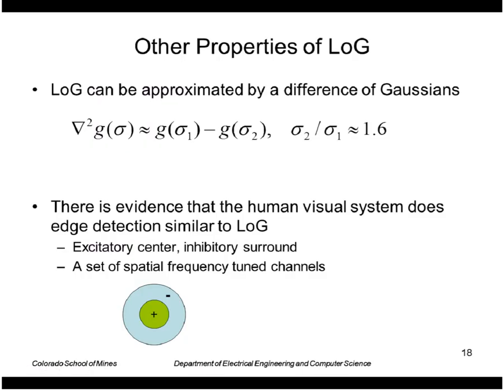Some other nice properties of Laplacian of a Gaussian, we can approximate it by a difference of Gaussian. If we just take a Gaussian of size sigma one, subtract a Gaussian of size sigma two, where the ratio is about 1.6, that's a very good approximation to LoG.